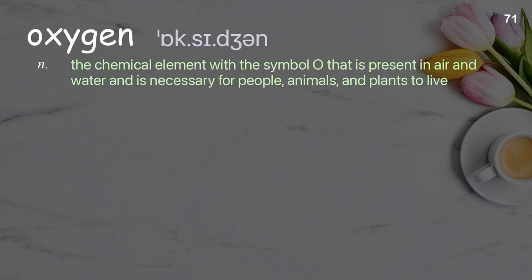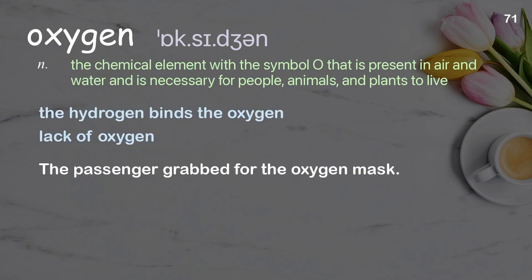Oxygen: the chemical element with the symbol O that is present in air and water and is necessary for people, animals, and plants to live. Examples: the hydrogen binds the oxygen, lack of oxygen. The passenger grabbed for the oxygen mask.